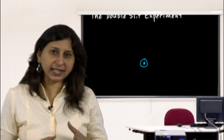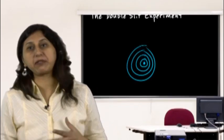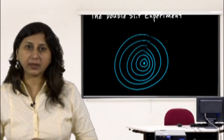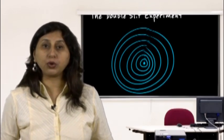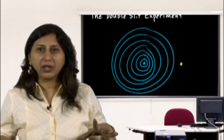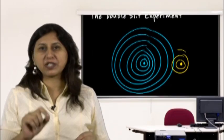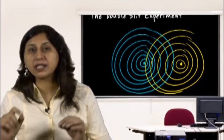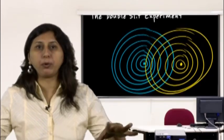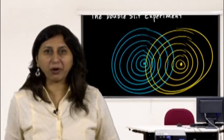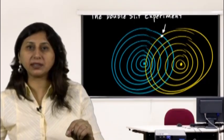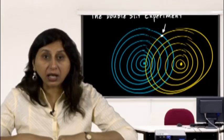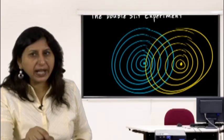Young's experiment: the wave theory of light came to prominence with Thomas Young's experiment performed in 1801. Imagine dropping a rock into a pond — waves spread out in a circular pattern. Drop a second rock and you have another set of waves from a second point. When the waves from one source cross the waves from another, they add up at that point to make a larger wave.